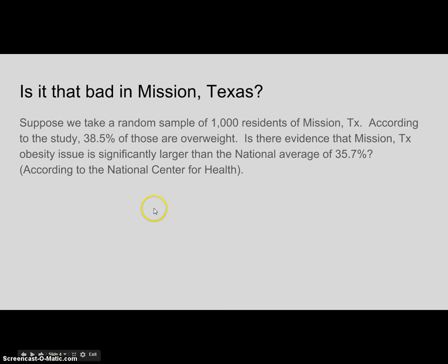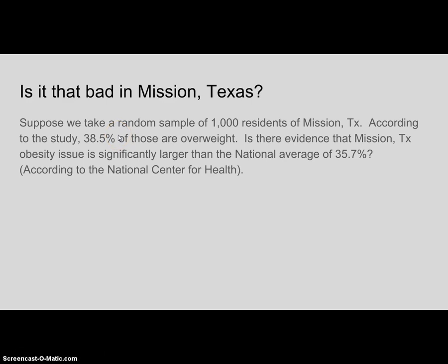That's according to the National Center for Health. So really what we're doing is comparing — the words 'significant' and 'evidence' are keys to understanding that we are going to do a hypothesis test. What we're doing is comparing our p-hat, which is 38.5, to a population proportion and seeing if there is evidence that they match up.